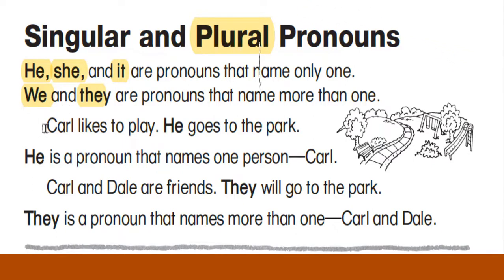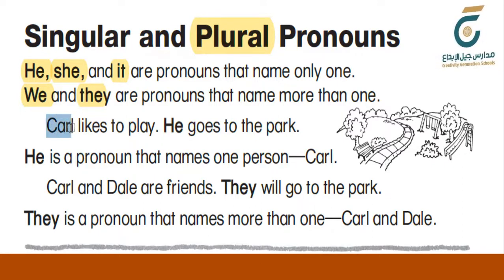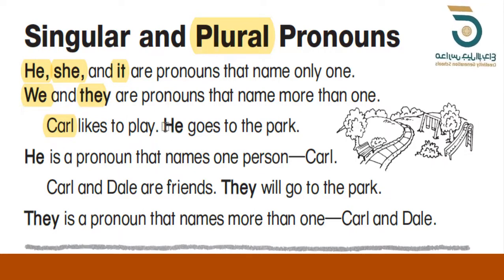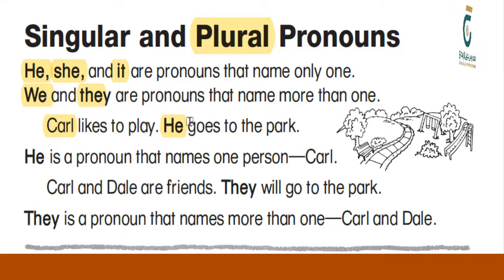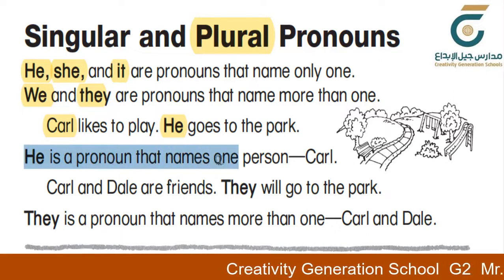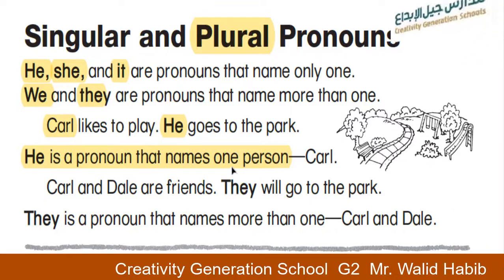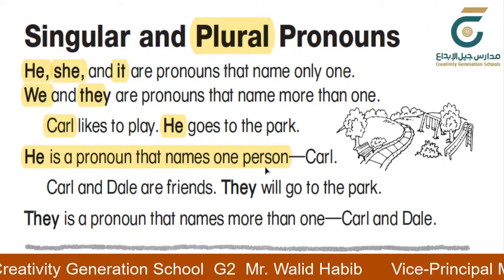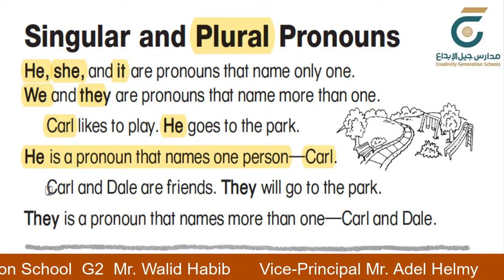Look at this example: Carl likes to play. He goes to the park. Carl is a singular noun, so we can refer to him with the pronoun he. He goes to the park. He is a singular pronoun that names only one person — Carl.